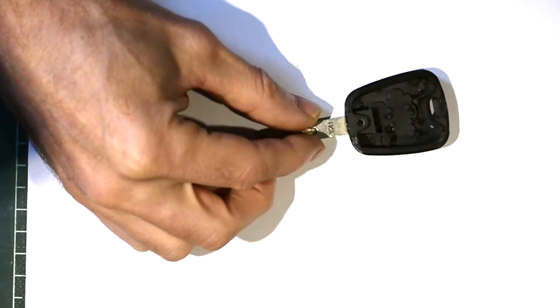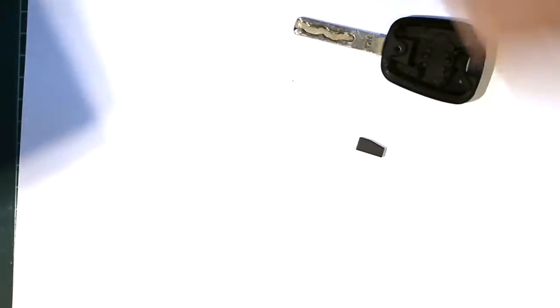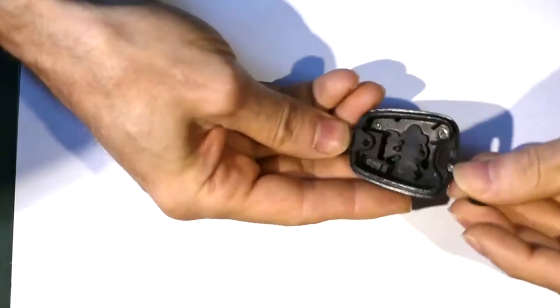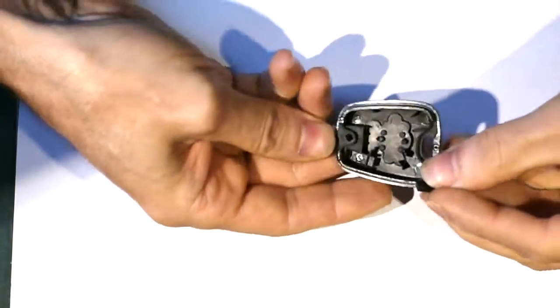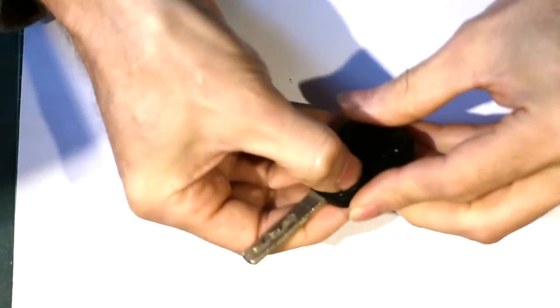The immobilizer isn't being deactivated by the key. For the princely sum of about six pounds from eBay I have bought a new clean and virgin transponder chip. Just slots in here like this. Yeah that's in.